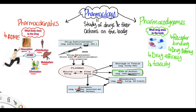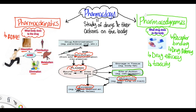When talking about pharmacokinetics, it involves absorption, distribution, metabolism, and excretion. Pharmacokinetics is mainly what the drug is doing to the body — so it's the site of action and how it interacts with the cell and on the receptor.